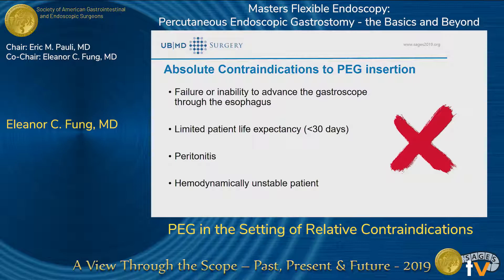A PEG tube is mostly for long-term enteral access, and if the patient is not going to survive that long, we really have to have a discussion about what the goals of care should be. Along the same lines, another absolute contraindication is peritonitis, and being in a patient that is hemodynamically unstable.